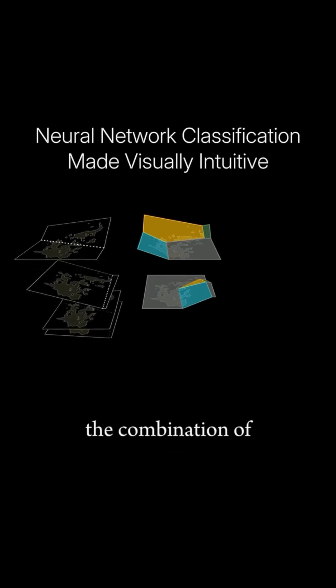After our first layer, the combination of our two ReLU folds created four regions for the next layer of our model to work with. These are easiest to see in a 2D projection like this.